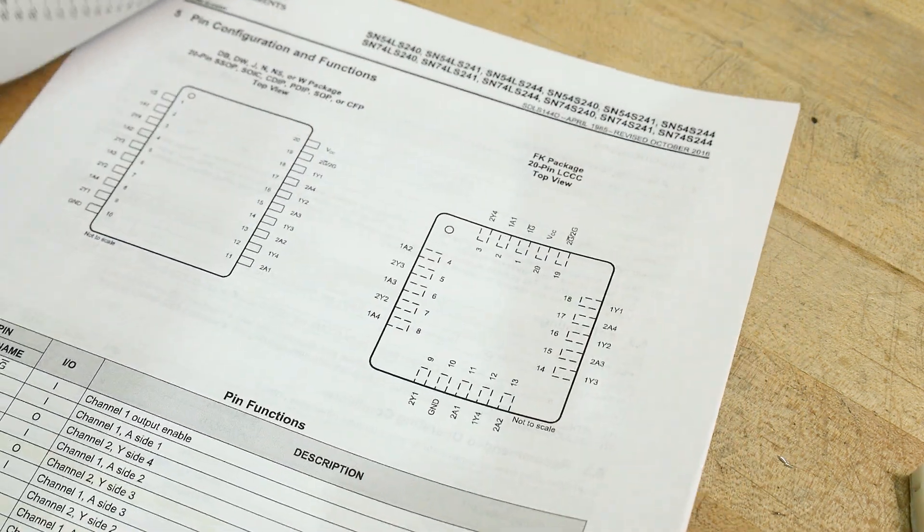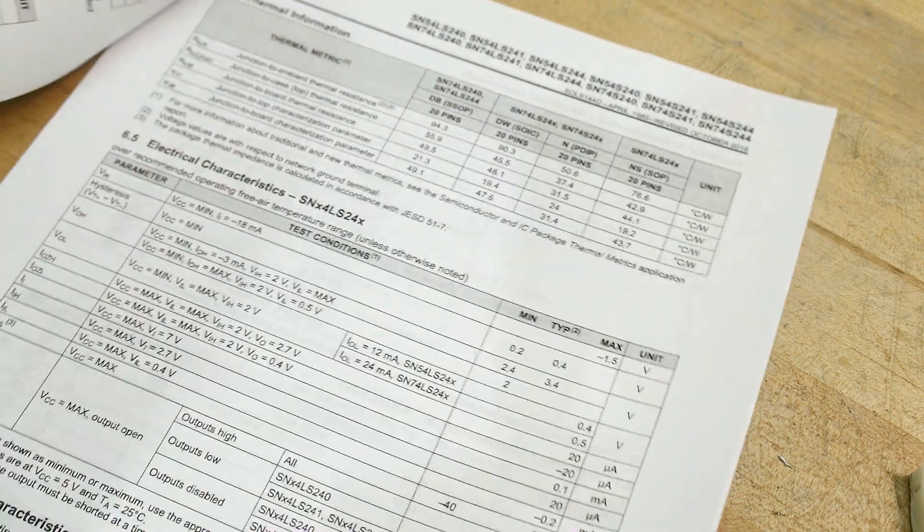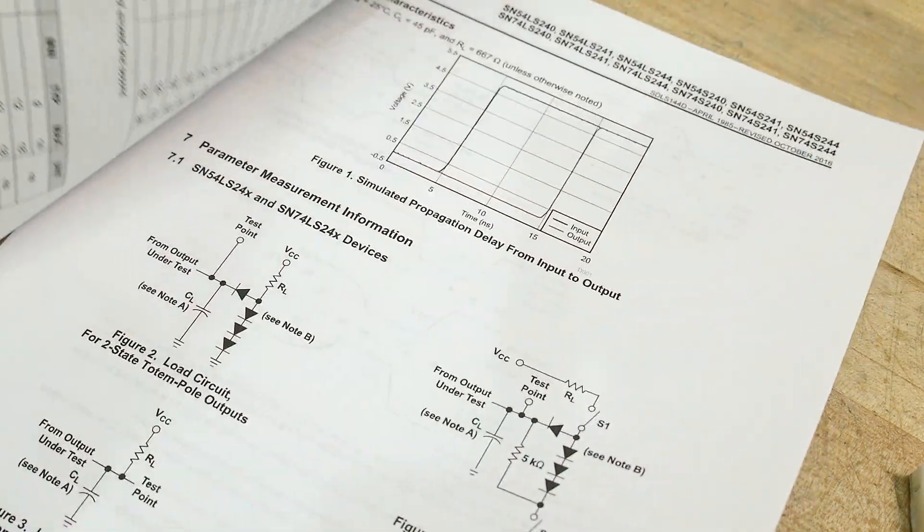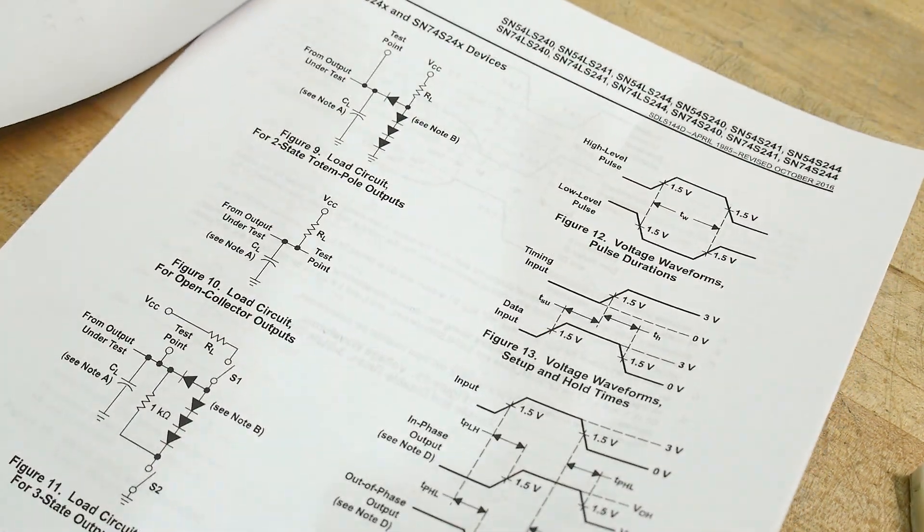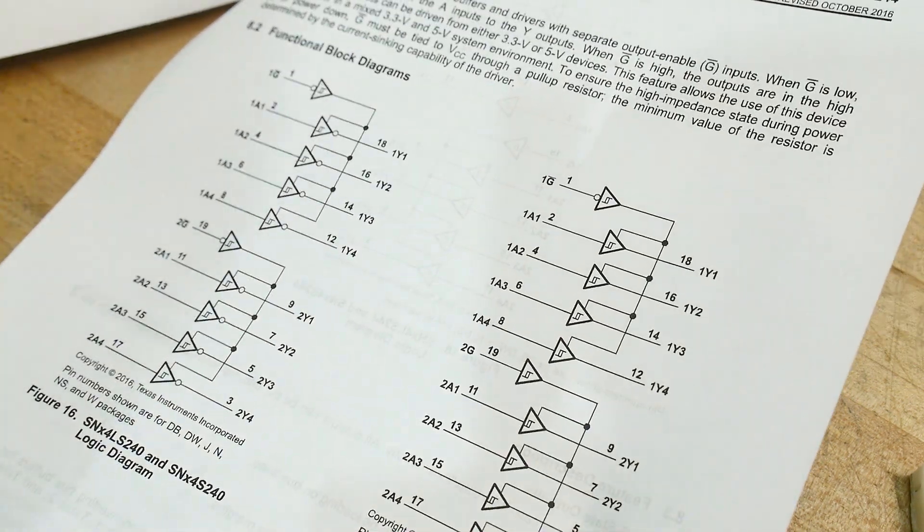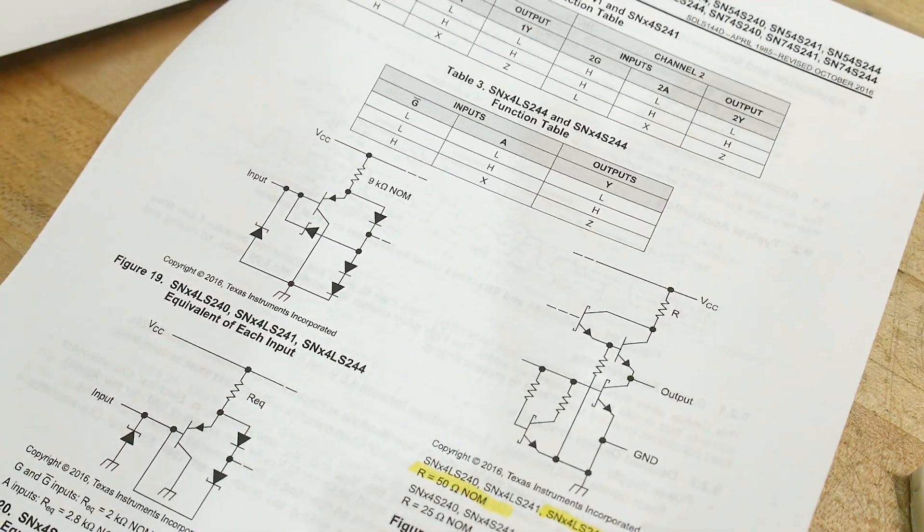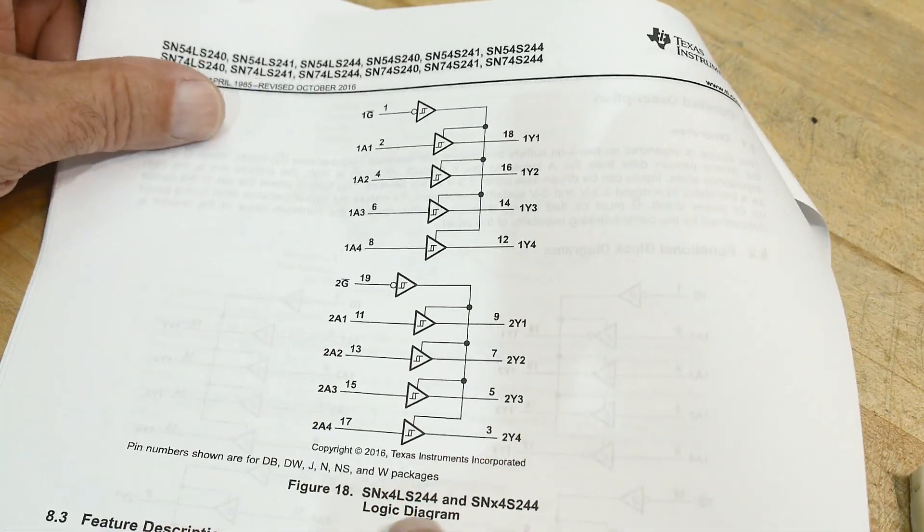Now, the part that we have is not that one. That's not the right schematic for it. I'm going to find a schematic for it. 240, 244. Yeah, okay. So, this is our part. This is the 244.